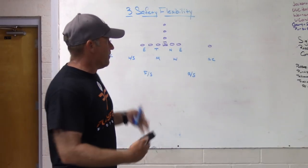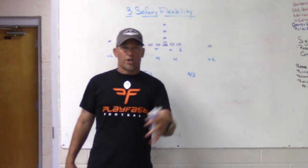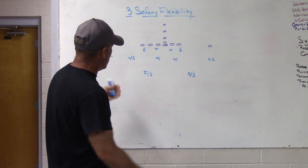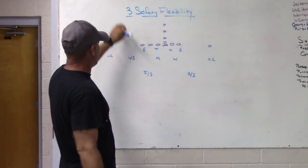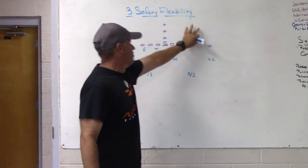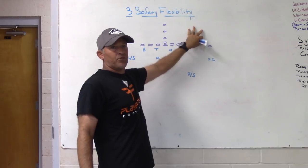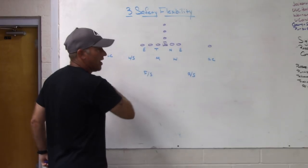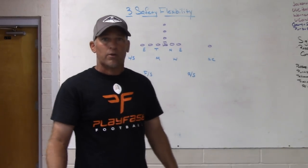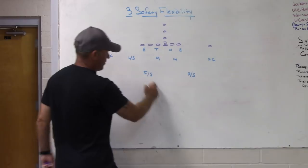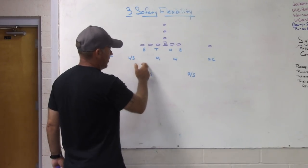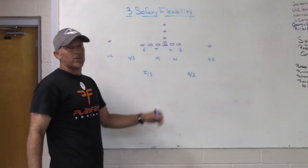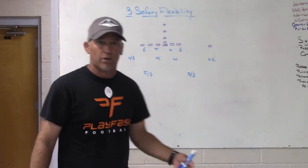For us, we are a middle of the field open team by nature. We are a quarters team — a quarter, quarter, half team. Against 21 personnel, we will start as a quarter-quarter-half team, playing quarters defense to the strength and some version of half defense to the field, usually an eight-man front structure. The middle of the field is technically open for us because we don't play with a true defined post player — we play with a safety reading off the release of a number two receiver. We don't play with a closed middle of the field.